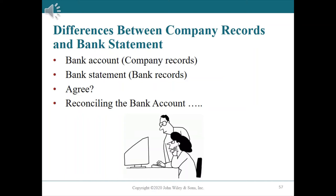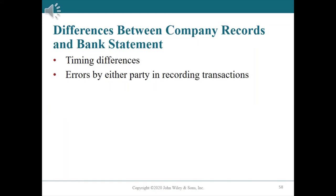Differences between company records and bank statement. Given that the bank and the company keep independent records, you might assume that the balances in both sets of records will always agree. In fact, the two balances are seldom the same because many transactions are not recorded at the same time on both records. It is therefore necessary to reconcile the company's cash account balance with the balance reported on the bank statement. There are two reasons records differ: one, timing differences where one party records the transaction before the other is aware of it; and two, errors made by either party.